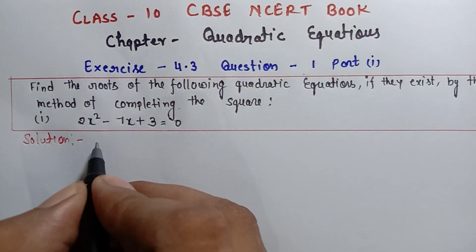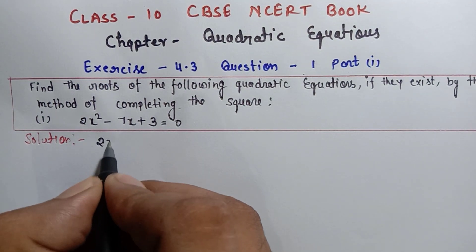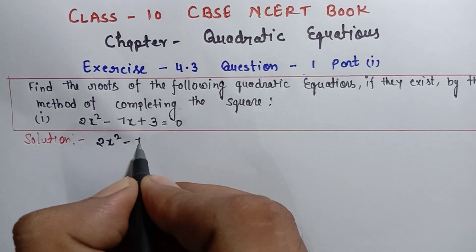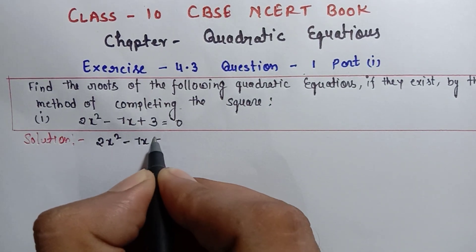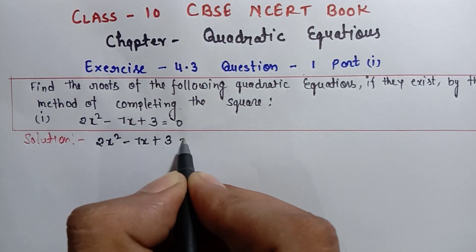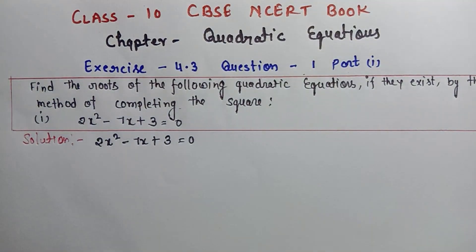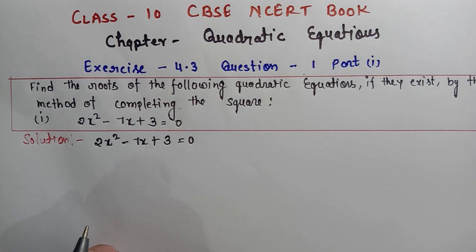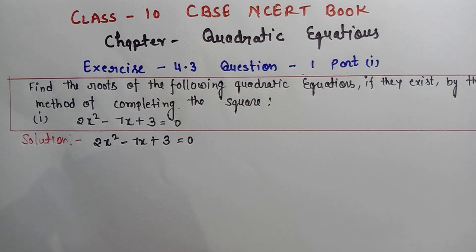यहाँ पर question है: 2x square minus 7x plus 3 equals to 0। 3 steps मैंने आपको completing the square method को सिखाया था, उसी को यहाँ पर follow करेंगे।